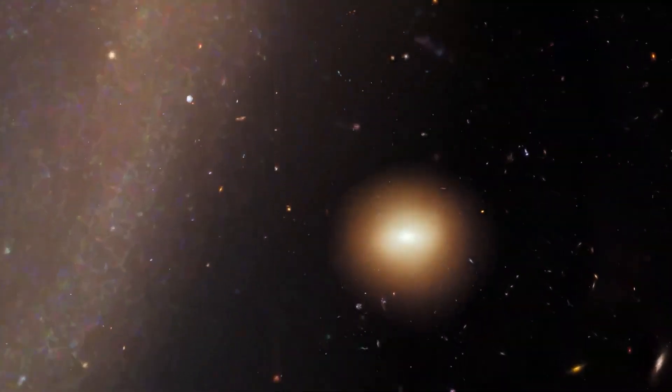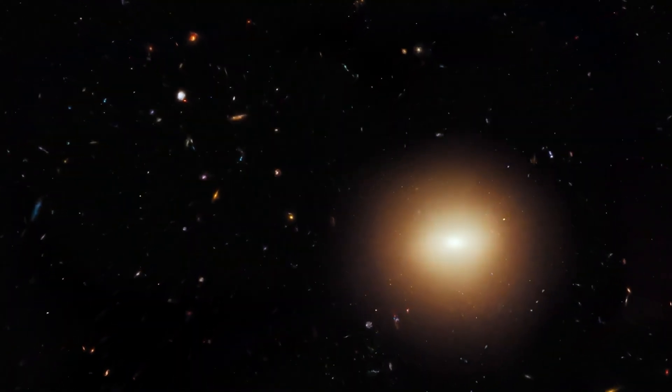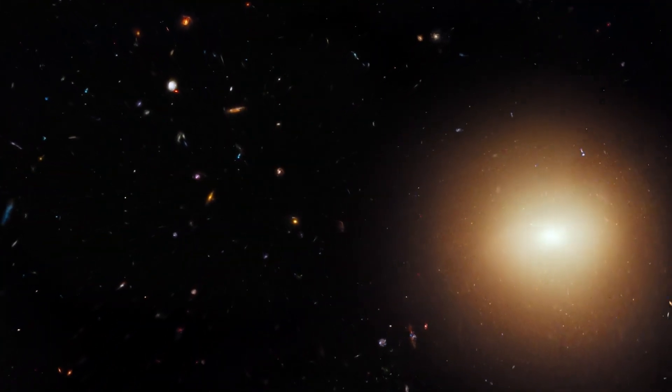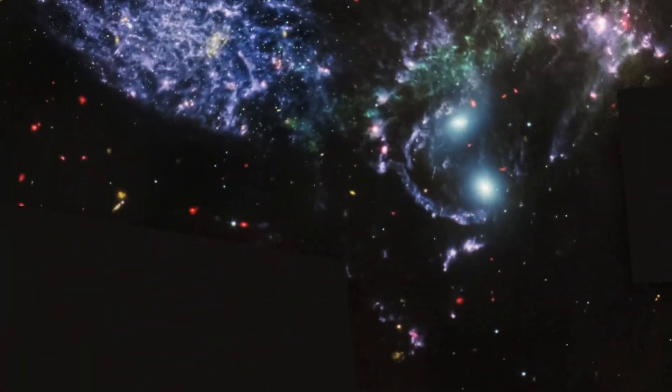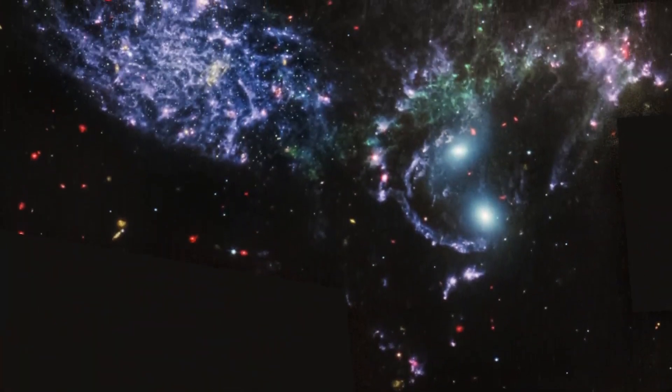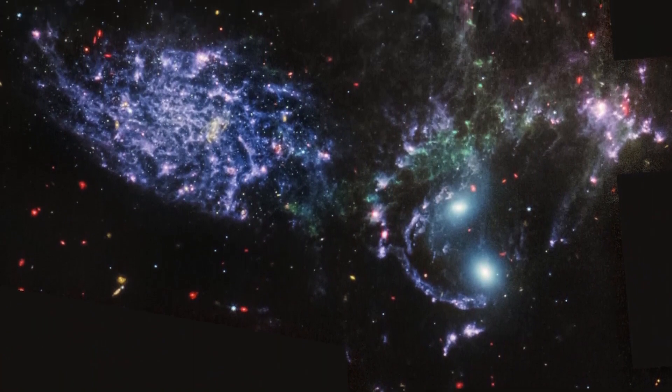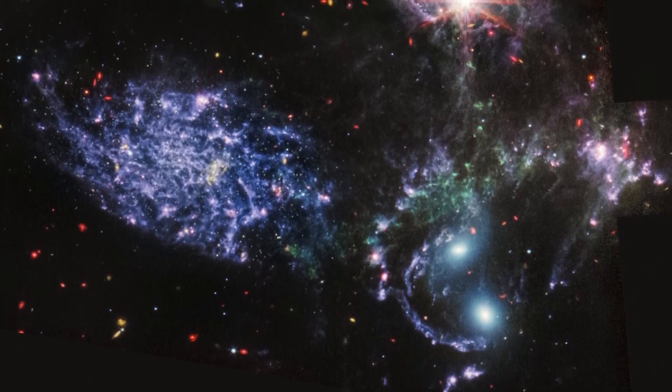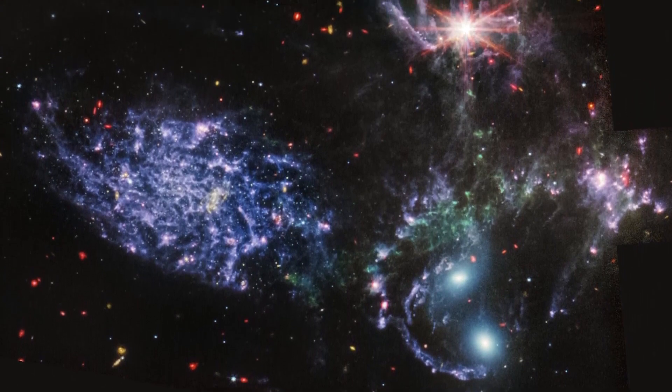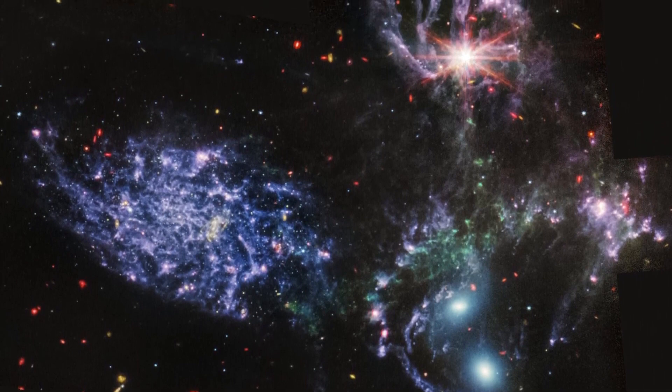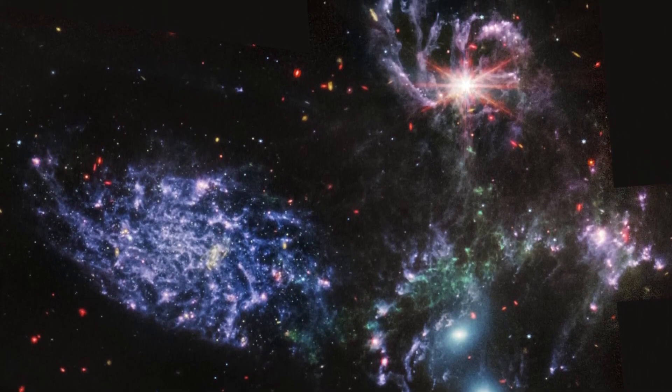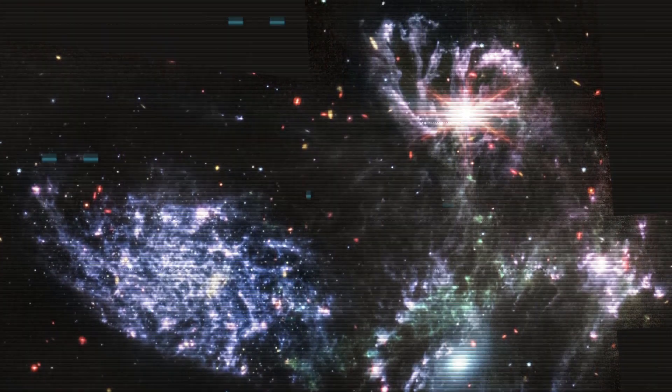One of the most eye-popping images released depicts what looks to be cosmic cliffs, valleys, and mountains, albeit with mountains that stretch to seven light years in height. The image captures part of a stellar nursery called NGC 3324 at the northwest corner of the Carina Nebula, which is roughly 7,600 light years from Earth.